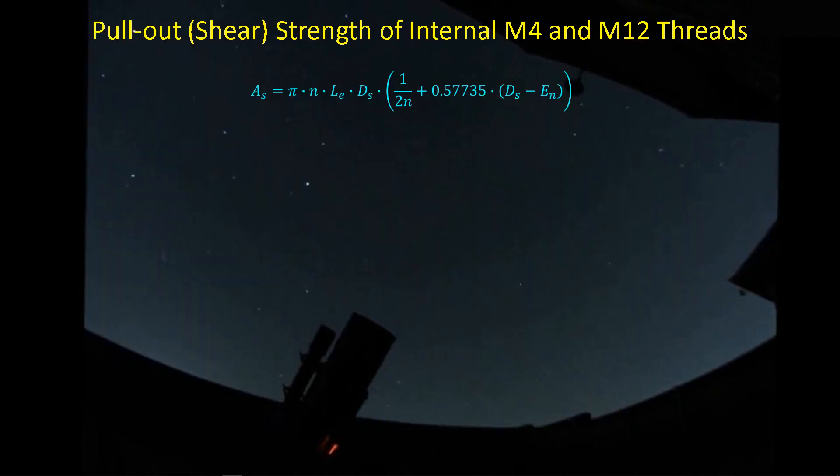I've never calculated the shear strength of internal threads. So I went to the Google machine and found this formula. What it's going to do is provide us the total shear area that is resisting the load that we're placing on it. And then with the shear area, we combine that with the yield stress and we can come up with the total load.